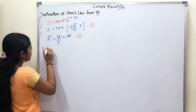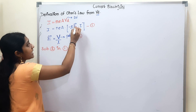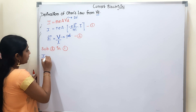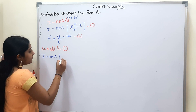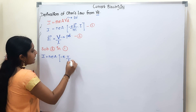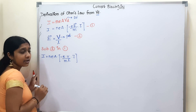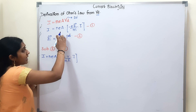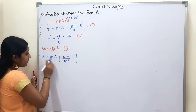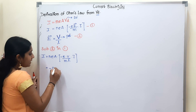Now we substitute equation 2 into equation 1. There is an electric field term, so we replace E with V by L. So I is equal to n·e·A times (minus e) into (V/L) divided by m, into tau. Simplifying, we get terms with minus e squared.